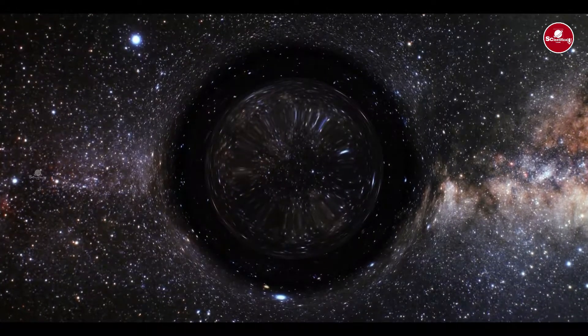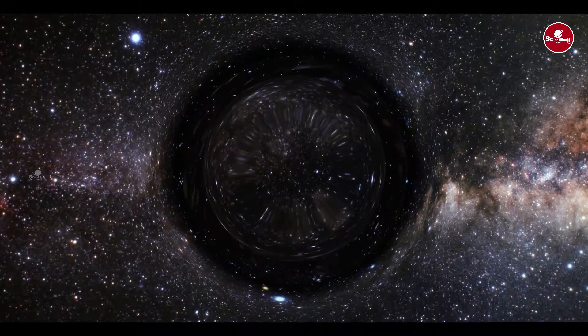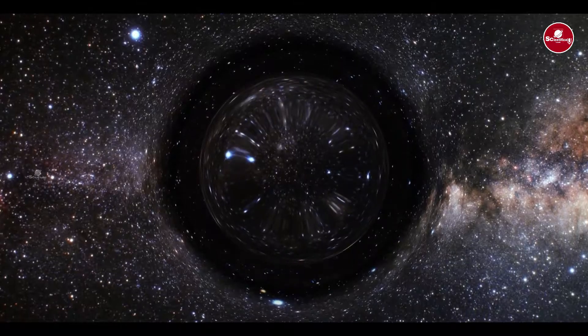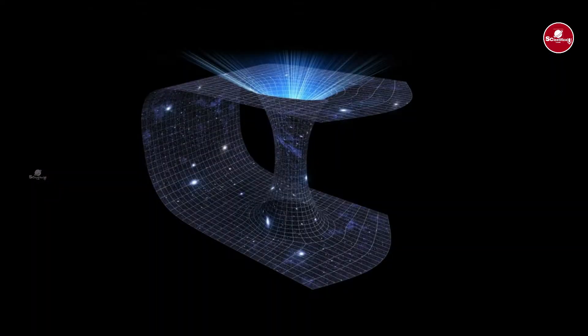The wormholes relate to the tesseract dimension and the space-time dimension concept, making vast interstellar distances relatively easy to traverse. For this space-time fabric, the universe can be folded so that distant points meet.